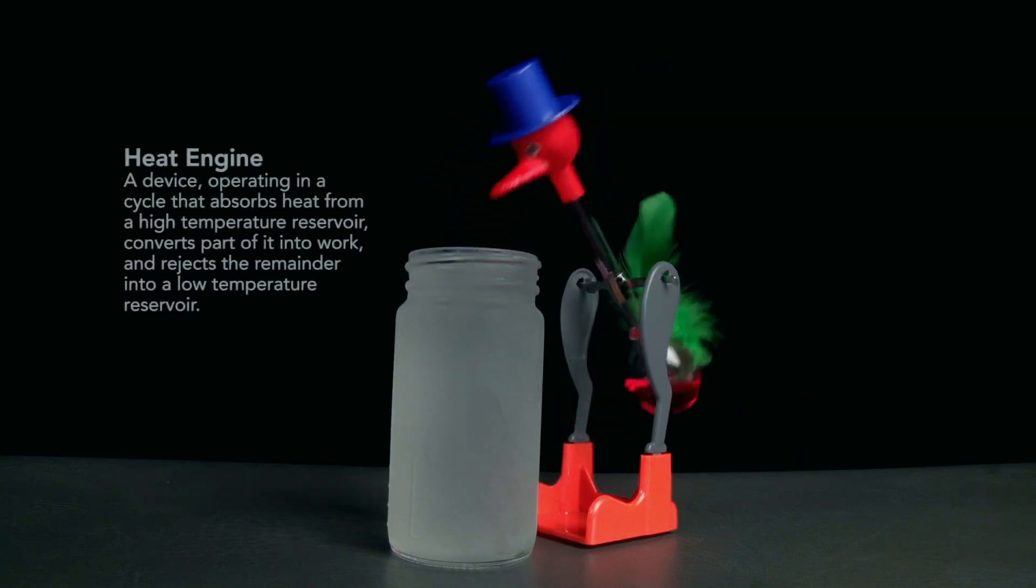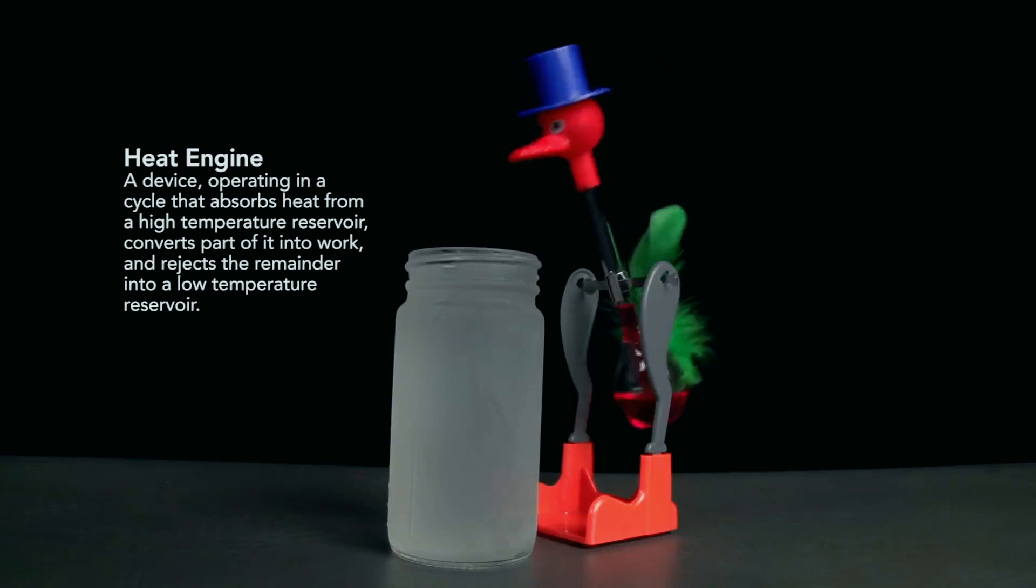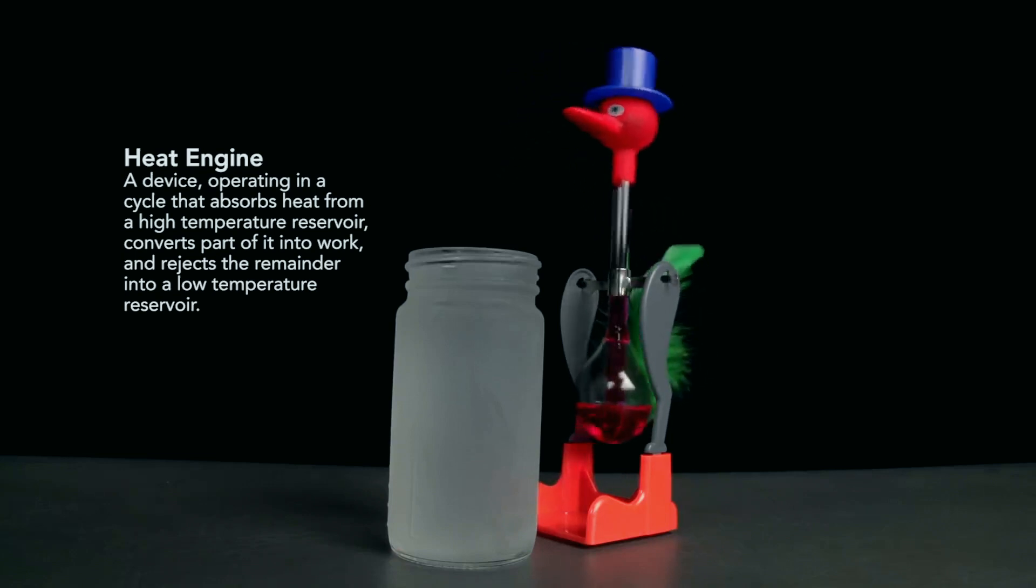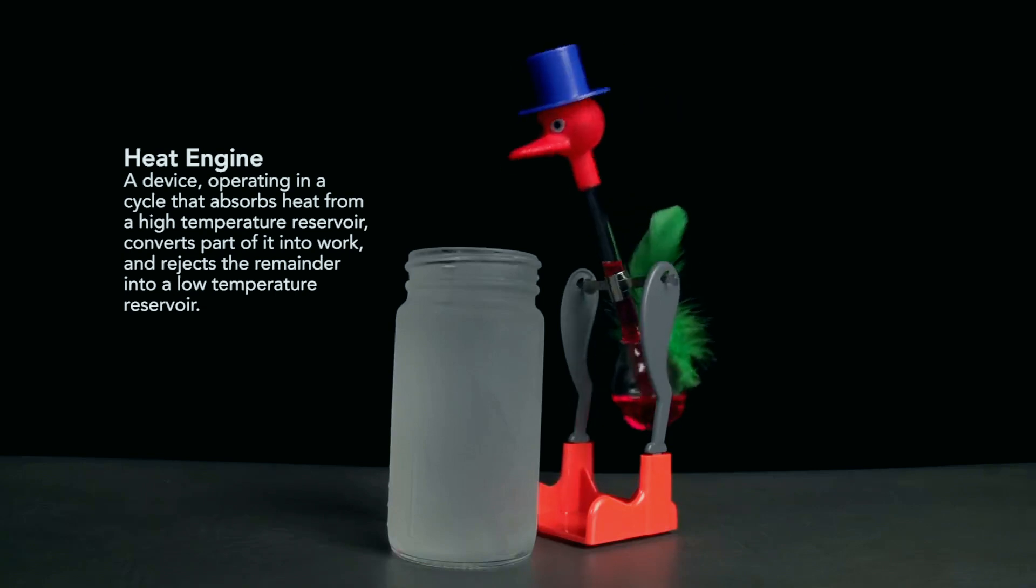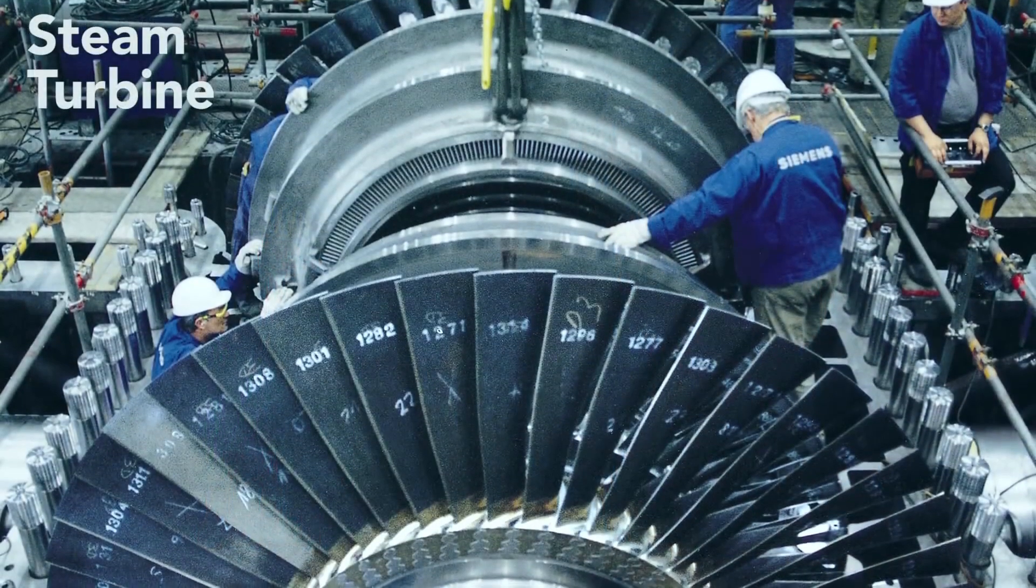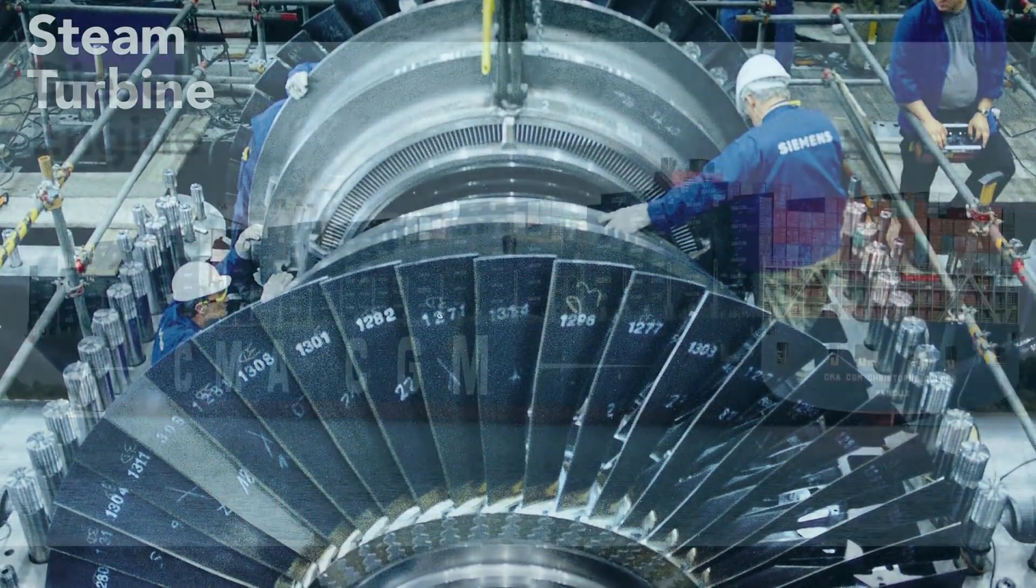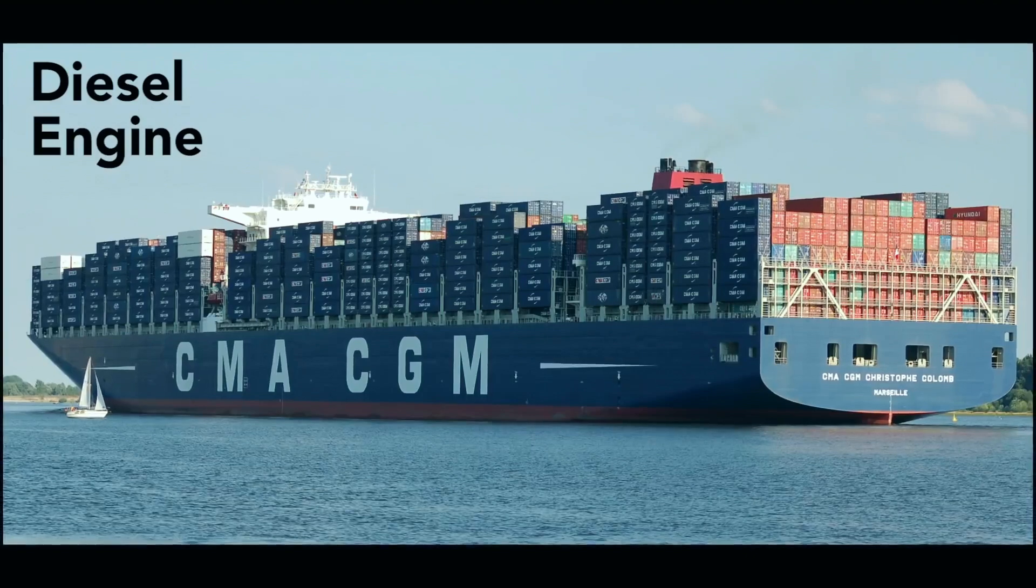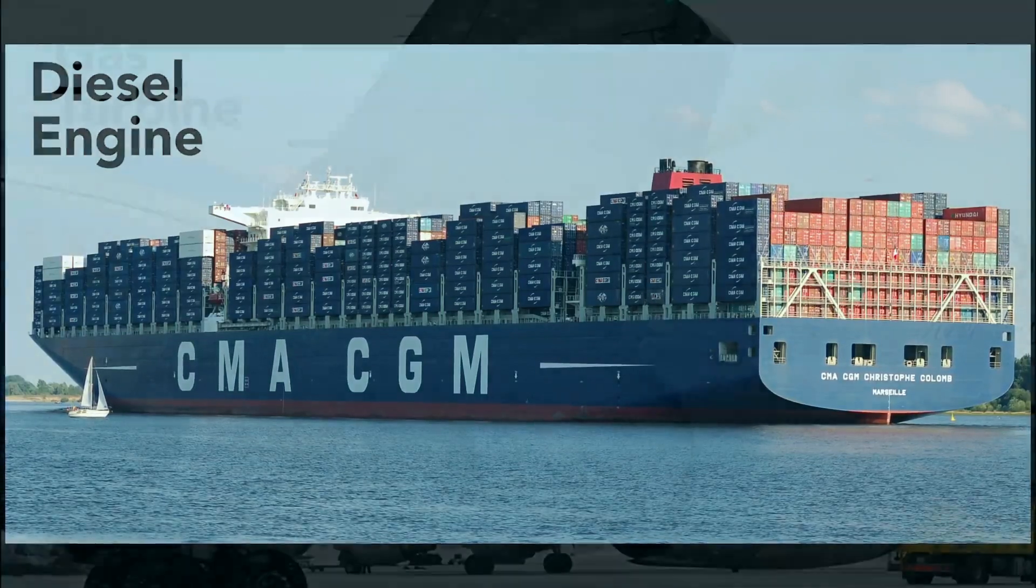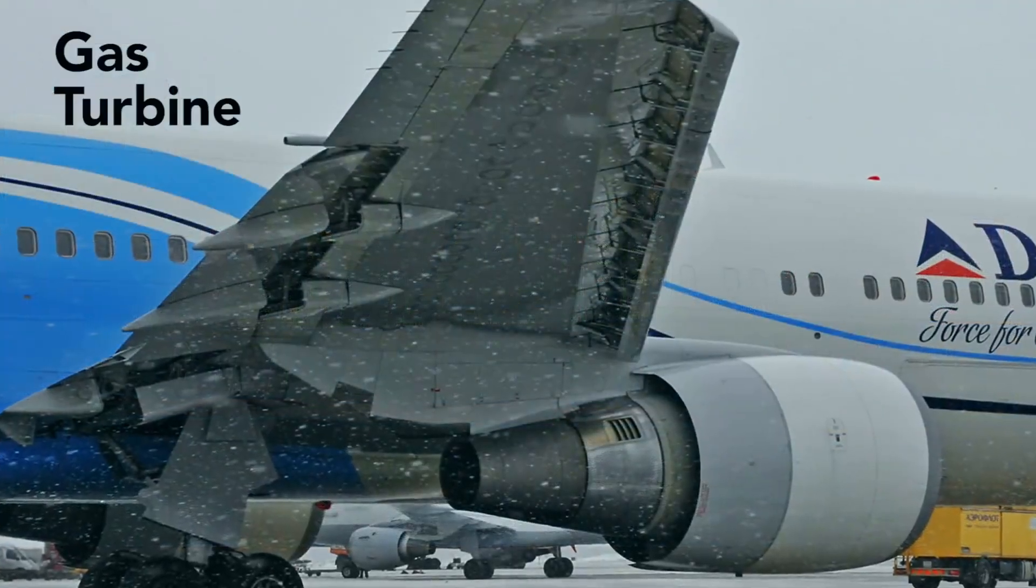These two flows define a heat engine—a device operating in a cycle that absorbs heat from a high-temperature reservoir, converts part of it into work, and rejects the remainder into a low-temperature reservoir. The fact that it's a heat engine means it's related to the great machines that make our globalized world happen. Among those, the mighty steam turbine that generates electricity, the giant diesel engine that propels container ships across the oceans, and the great gas turbine that flies us around the globe.